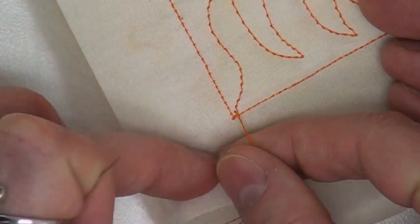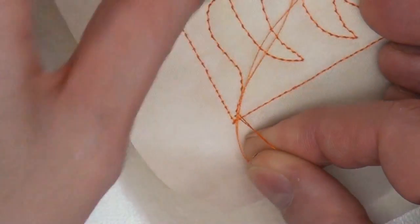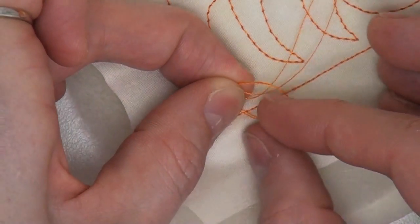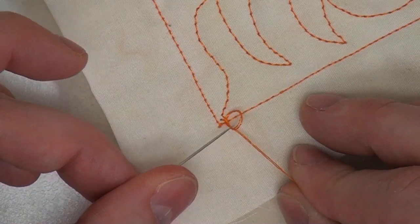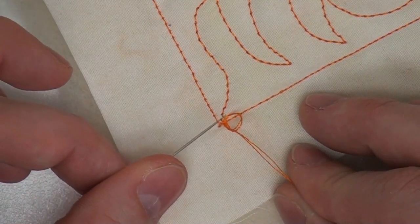I'm going to tie an overhand knot, just make a loop, and then pass the tails through that loop. And now I'm going to tighten this knot up, and I'm not going to tighten it up all the way to the surface of the quilt.